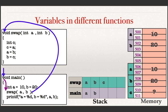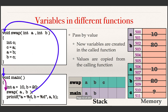An important point to remember is how the variables are passed — it is called pass by value. New variables are created in the called function (swap). You can name them a and b or x and y — they are just variable names. New variables are created in memory and values are copied from the calling function. So the values 10 and 20 are copied from main's memory locations into the new locations for the swap function.